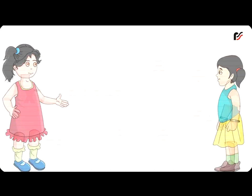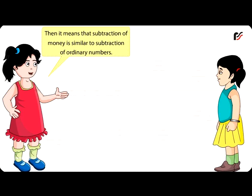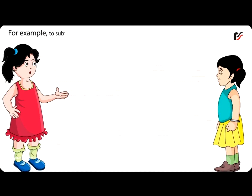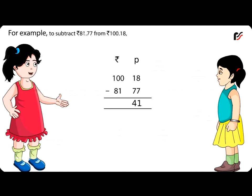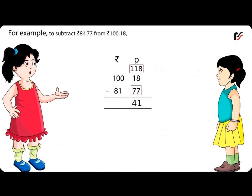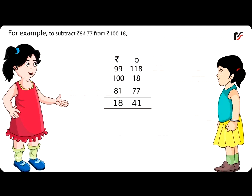Subtraction of money is similar to subtraction of ordinary numbers. For example, to subtract ₹81.77 from ₹118.18, arrange the rupees and paise columns respectively. Subtract the paise column first. Borrow 1, i.e. 100 paise, from the rupees column. We get 100 paise + 18 paise = 118 paise. Subtract: 118 paise − 77 paise = 41 paise. Now subtract ₹81 from the remaining ₹99. We get ₹99 − ₹81 = ₹18. Thus the difference is ₹18.41.